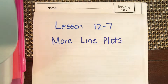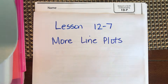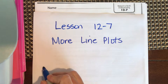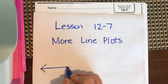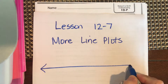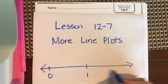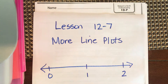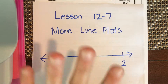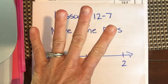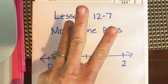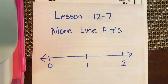This is lesson 12-7: more line plots. This is a continuation of what we did yesterday where we had a number line with whole numbers and divided it into fourths. To divide into fourths, we draw three lines.